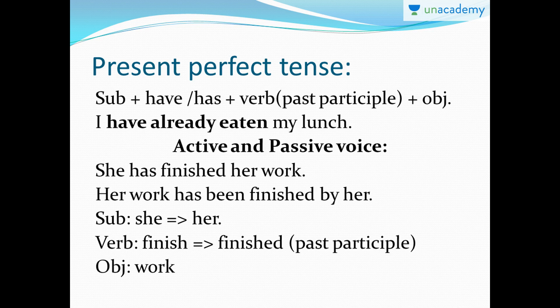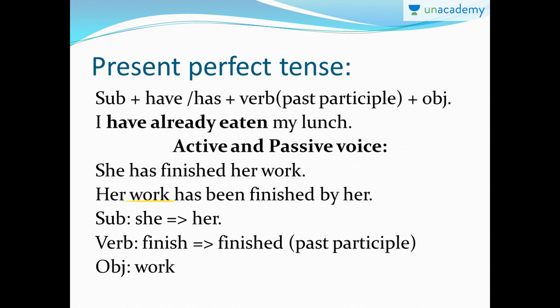Moving ahead — see the next example: 'She has finished her work.' This is active voice because the subject is at the beginning, followed by the verb, ending with the object. When the subject is at the beginning, you know it is active voice and the object is at the end. In order to put a sentence in passive voice, you put the object at the beginning, so 'her work' comes first, and 'she' turns into 'her' at the end.